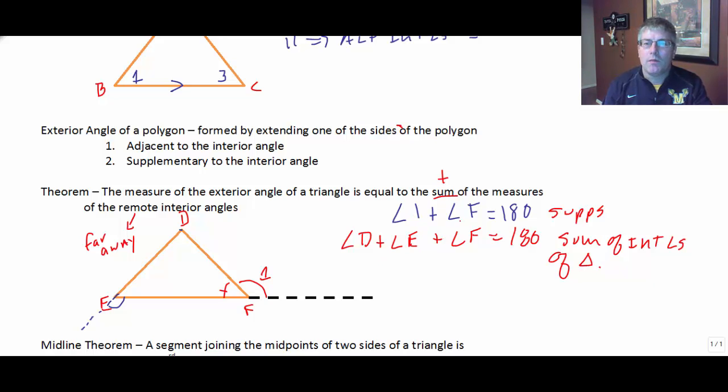Well, if angle 1 plus angle F equals 180. And angle D plus angle E plus angle F equals 180. The logic tells us, or substitution tells us, that angle D plus angle E must equal angle 1.